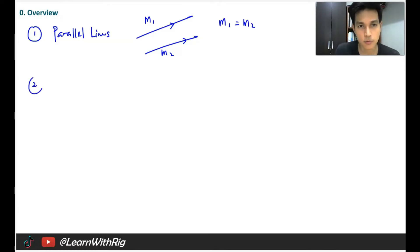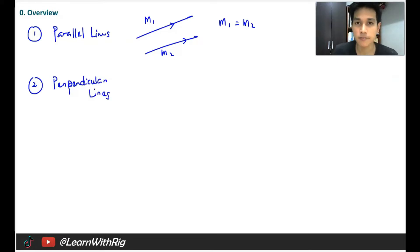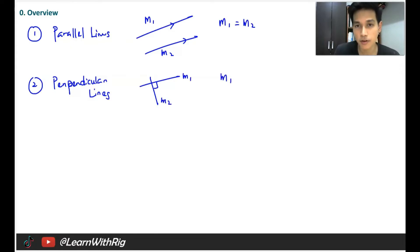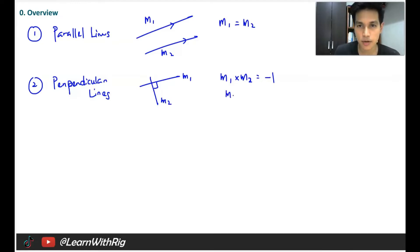The second thing you have to know is for perpendicular lines. Parallel lines have the same gradient, but perpendicular lines don't have the same gradient. What you need to know is that when you multiply both gradients, you should get negative 1. That is the characteristic of a perpendicular line. In other words, M1 times M2 should be equal to negative 1 if they are perpendicular.